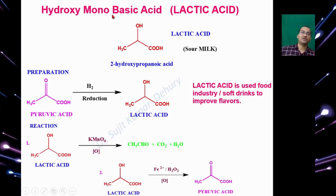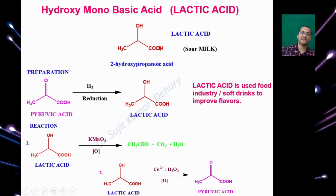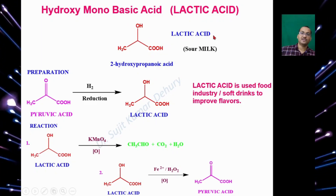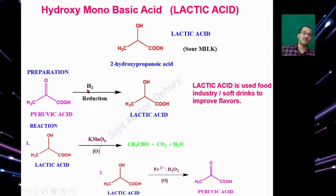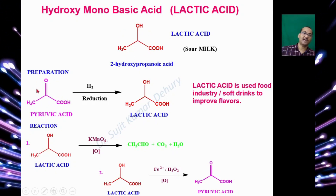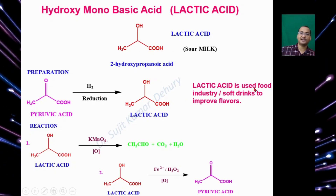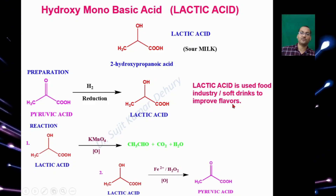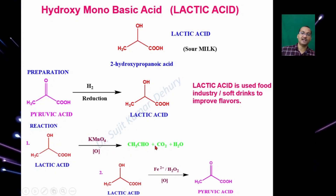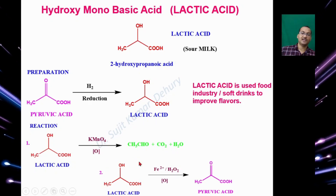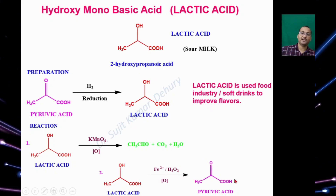Monohydroxy monocarboxylic acid is called Lactic Acid — one hydroxyl group and one carboxylic acid group — present in sour milk. To prepare Lactic Acid, start with Pyruvic Acid and reduce with Hydrogen to get Lactic Acid. Lactic Acid is used in the food industry and soft drinks to improve flavors. Lactic Acid reacting with KMnO₄ gives Acetaldehyde, CO₂, and water. Lactic Acid reacting with Fe²⁺ and Hydrogen Peroxide gives Pyruvic Acid.